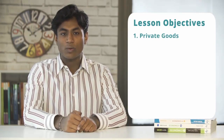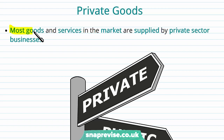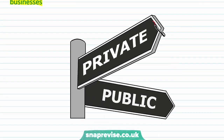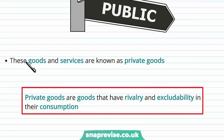In this video we'll be looking at private goods and then we will be finishing off with a summary. Most goods and services that are in the market are going to be supplied and produced by private sector businesses. A private sector business is one which is in charge of its own production and is not dictated by the government as to what to produce, so they have free choice about what they would like to make. These goods and services made by private sector businesses are called private goods.